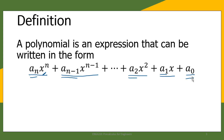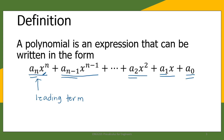That is why it's called the constant term. The term with the highest degree is called the leading term — the leading term is the term with the highest exponent. The constant or coefficient of the leading term is called the leading coefficient. So in this case, a sub n is the leading coefficient.